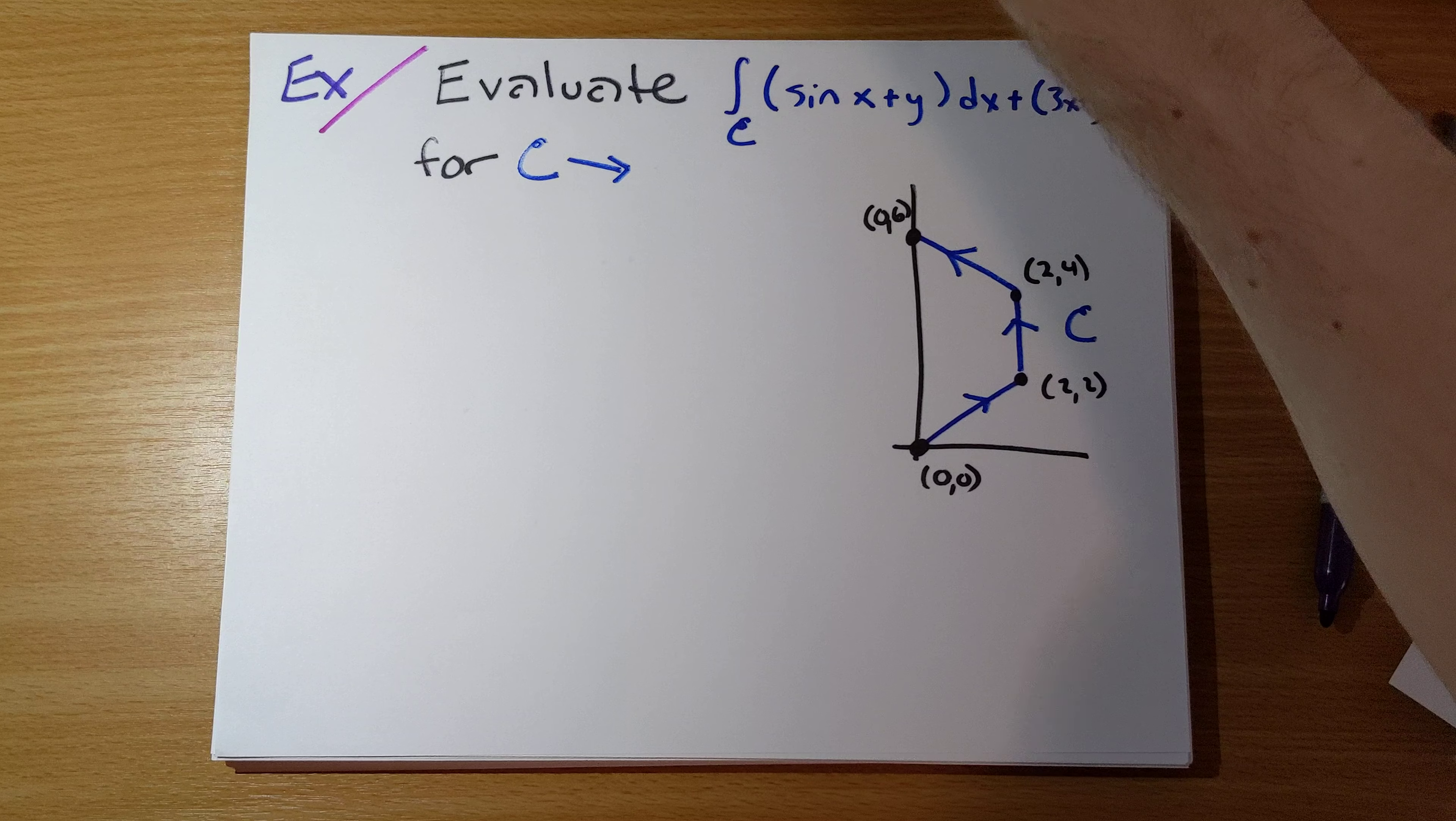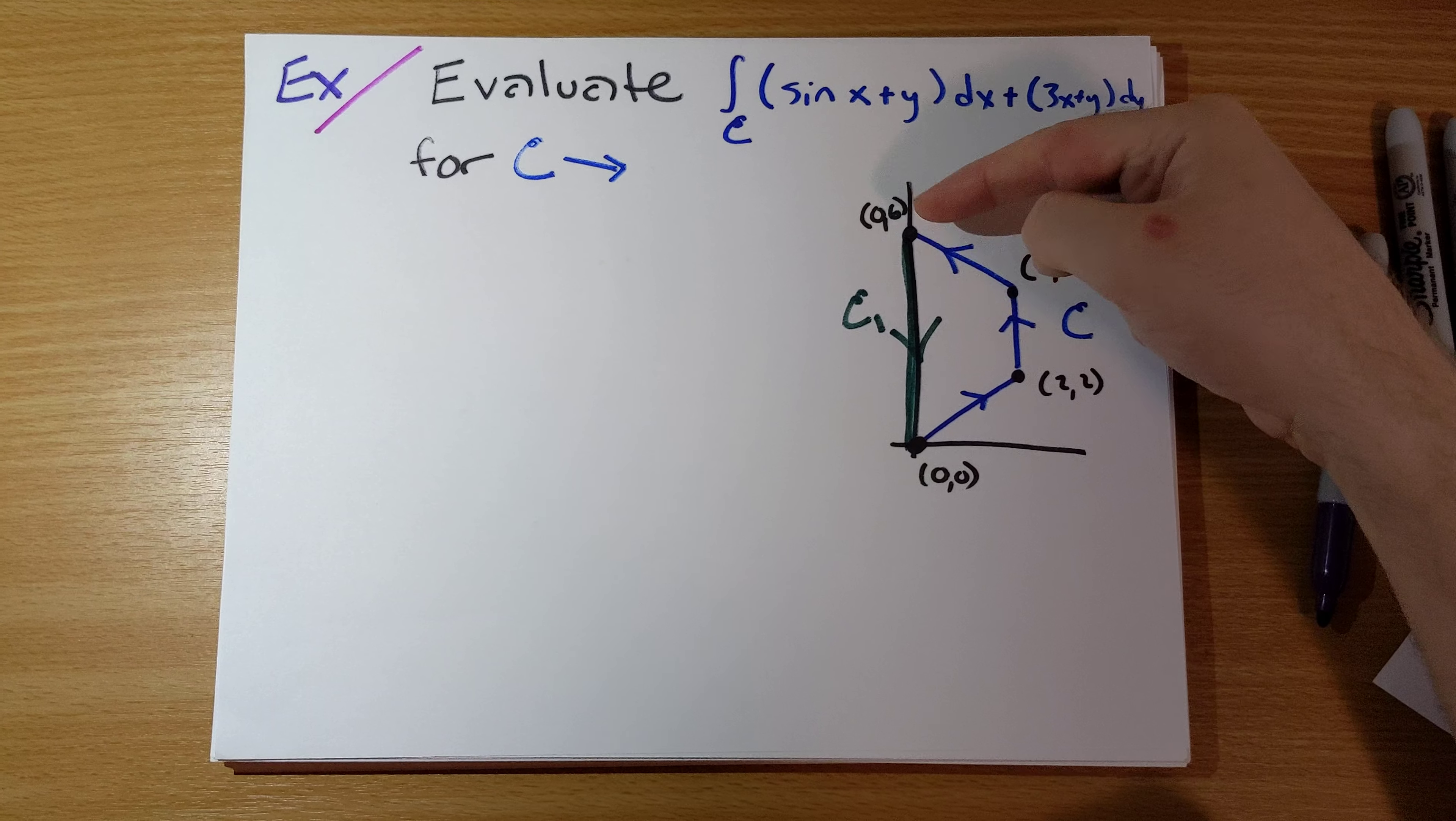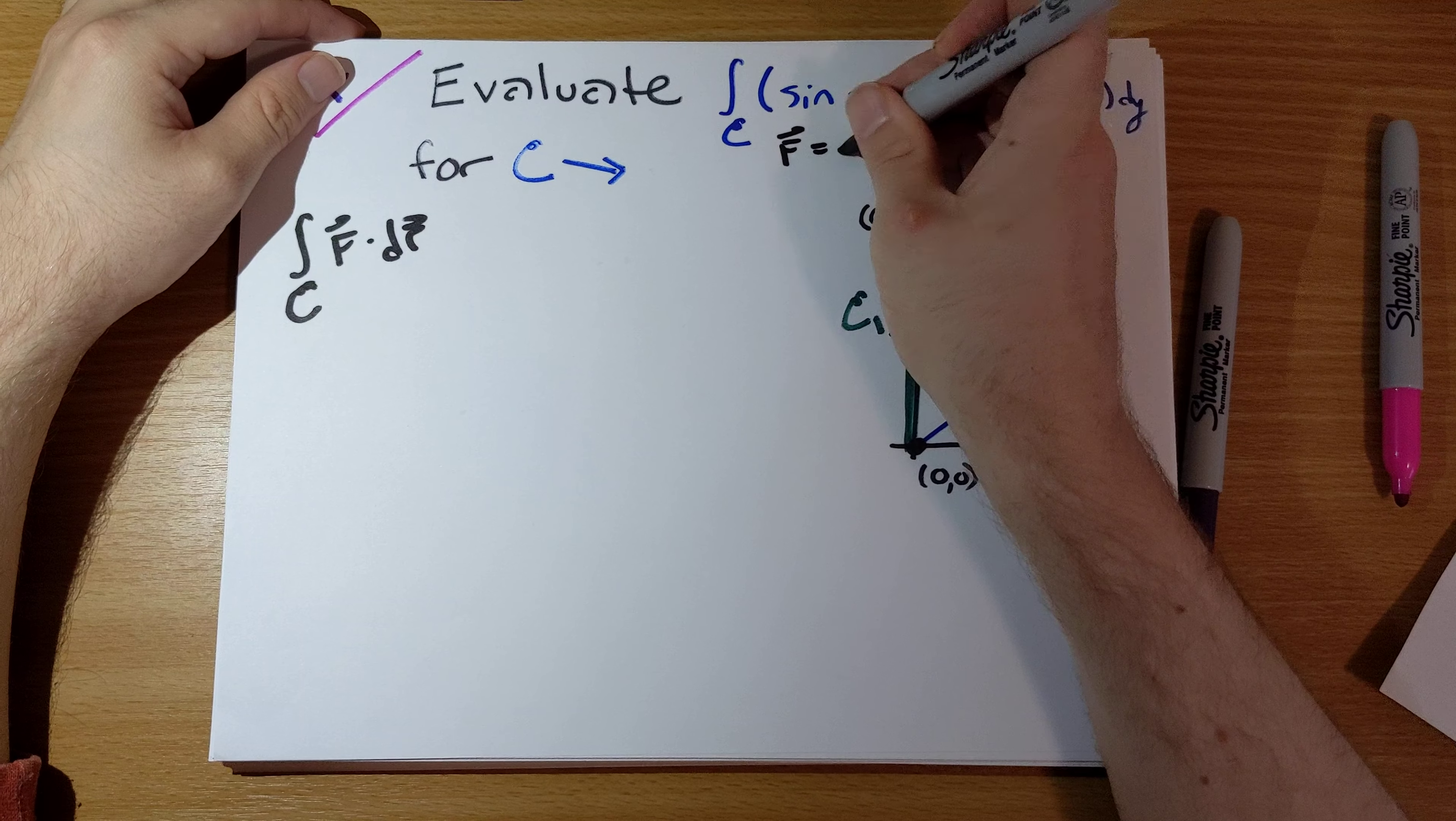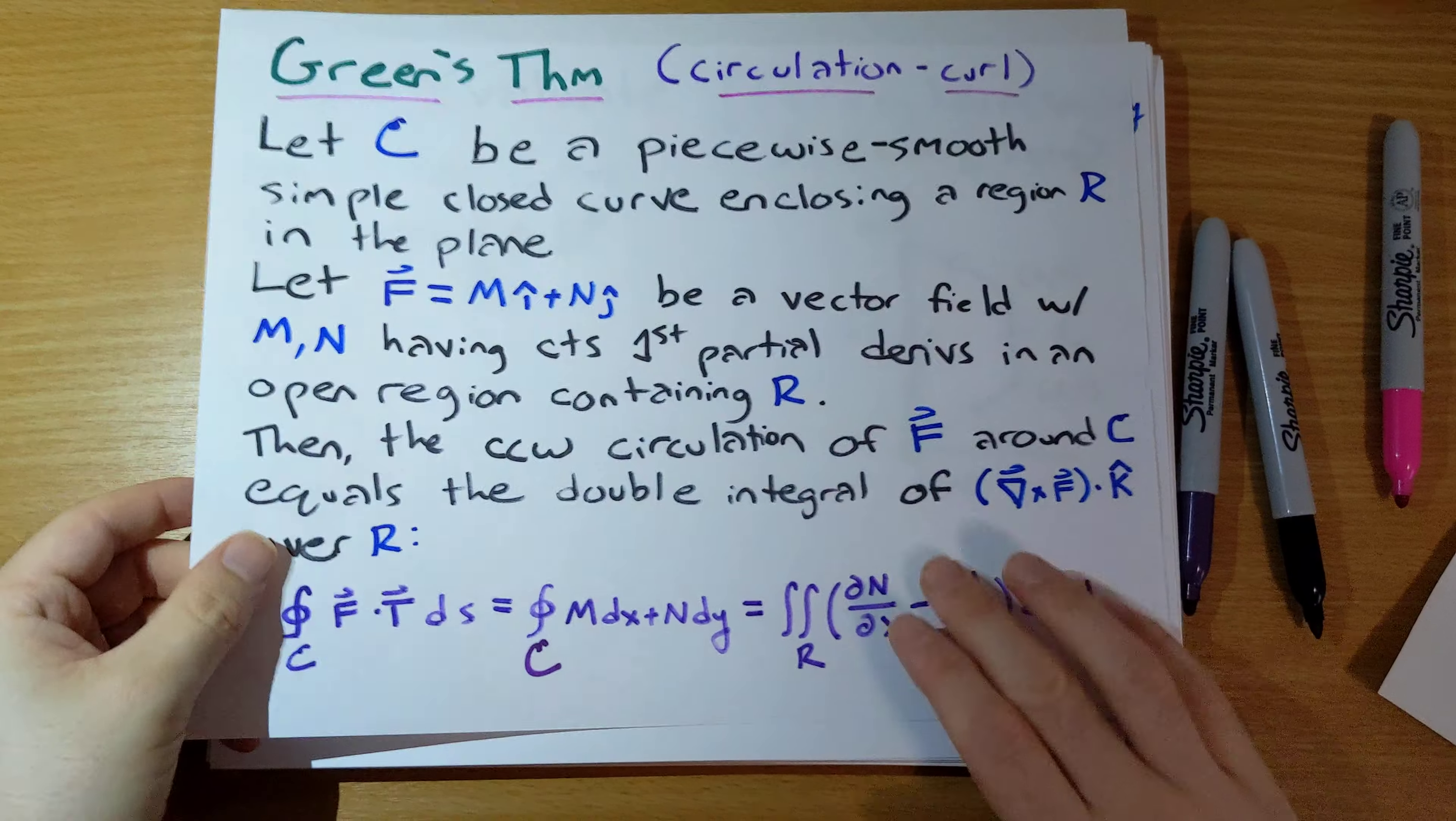Here is the thing we care about, in blue is C. If we tack on C1, a line segment from (0,6) to (0,0), we can say that the integral over C of f·dr plus the integral over C1 of f·dr gives us a vector line integral around this entire loop. Now Green's theorem is coming into play.